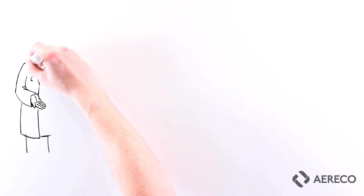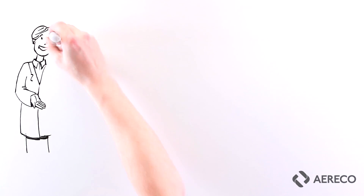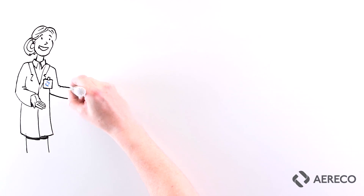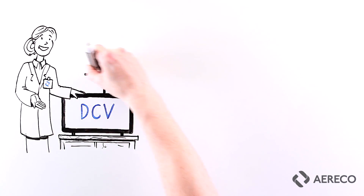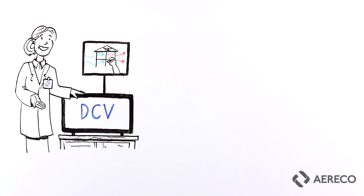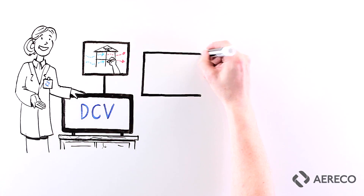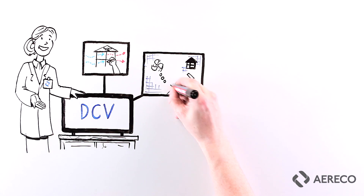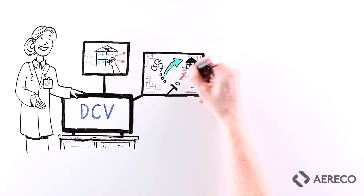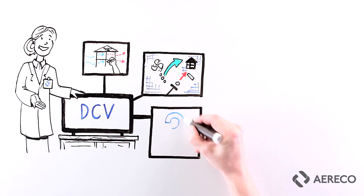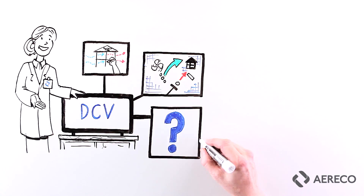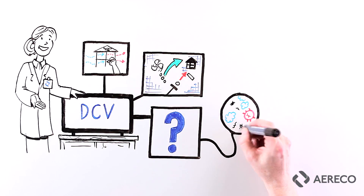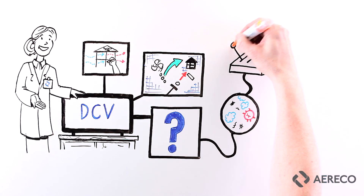In this video we are going to look at demand control ventilation, or DCV. DCV, rather than being a specific system type like the ones in the last video, is more a strategy of ventilating buildings that can be applied to many of them. So what is it then?